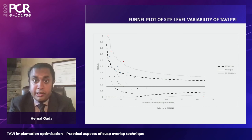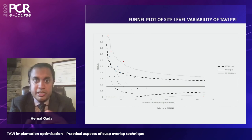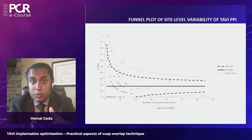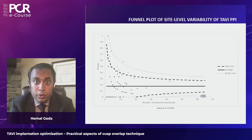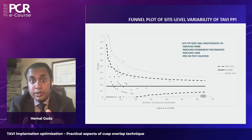Hermel presented site-level variability data on permanent pacemaker implantation at 30 days across the Evolute low-risk trial. The mean rate was 17.4 percent, shown as a solid line on a funnel plot. Their site, the highest enrolling site, appeared in the bottom-right quadrant — well below the two confidence interval bounds — indicating they were systematically doing something different. The patient population was similar to other sites, confirming the difference was procedural.